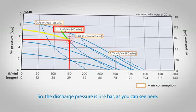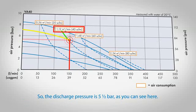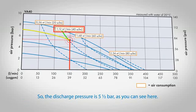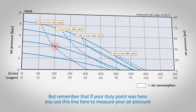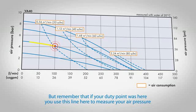So the discharge pressure is 5½ bar, as you can see here. But remember that if your duty point was here, you use this line here to measure your air pressure and this dotted line here for air consumption.